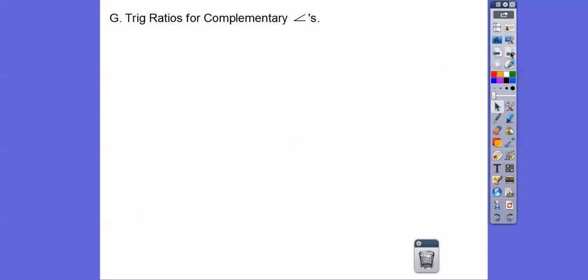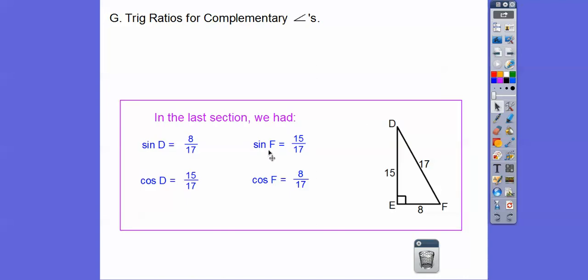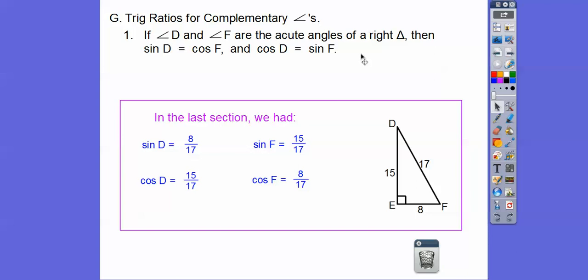Trig ratios for complementary angles: from the last section, check this out — the sine of D is the same as the cosine of the other acute angle. Here's D, here's F — the sine of one angle equals the cosine of the other, and vice versa. So if D and F are the acute angles of a right triangle, then sine of D equals cosine of F, and cosine of D equals sine of F.